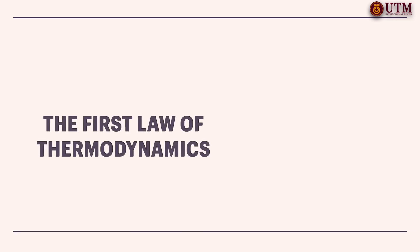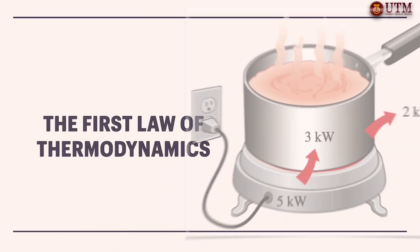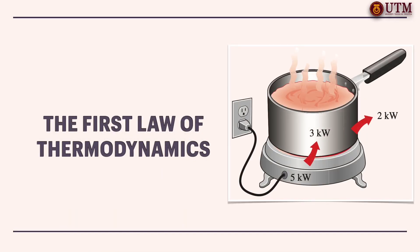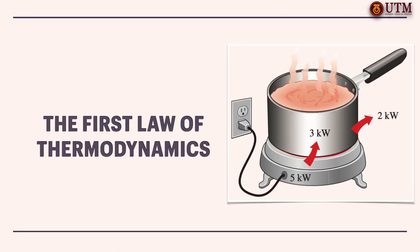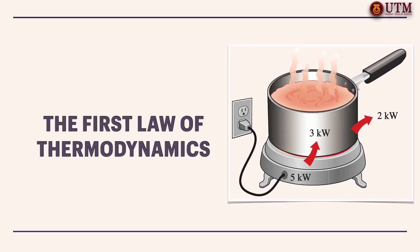The first law of thermodynamics is an expression of the conservation of energy principle. Recalling energy principle conservation, energy can change from one form to another, but the total energy remains constant. Based on the example, the electrical energy is transformed into heat energy to boil the soup inside the pot. Part of the heat is transferred to the surroundings. Energy is a thermodynamics property.